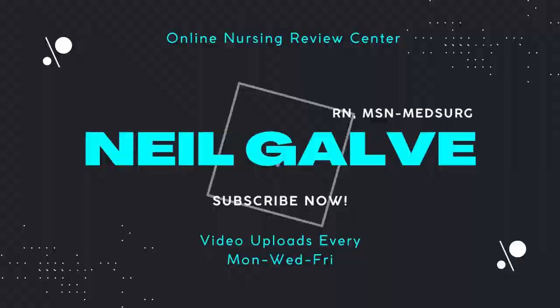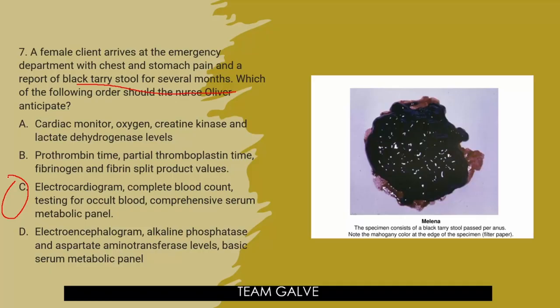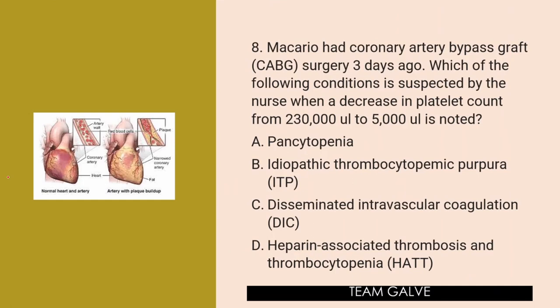Question number 8. Macario had a coronary artery bypass graft surgery (CABG) 3 days ago. Which of the following conditions is suspected by the nurse when a decrease in platelet count from 230,000 UL to 5,000 UL is noted? Is it A, pancytopenia? Is it B, idiopathic thrombocytopenic purpura (ITP)? Is it C, disseminated intravascular coagulation (DIC)? Or D, heparin-associated thrombosis and thrombocytopenia (HAT)?